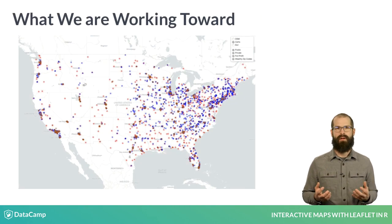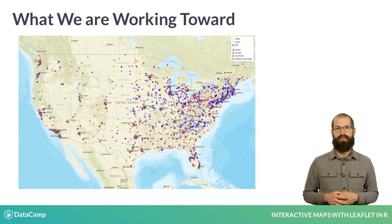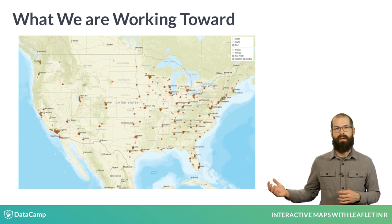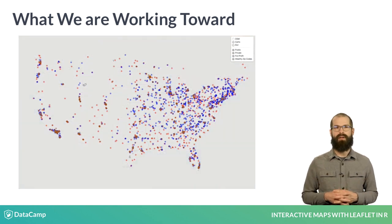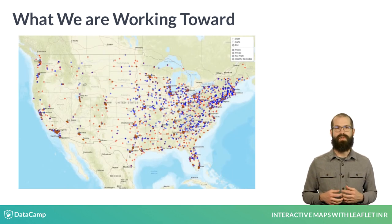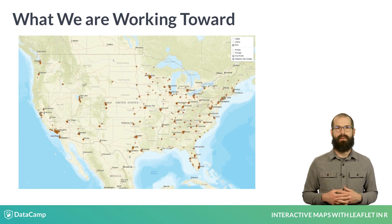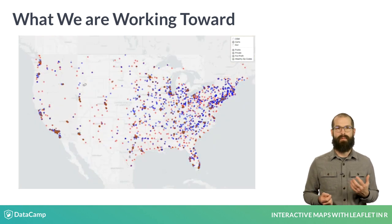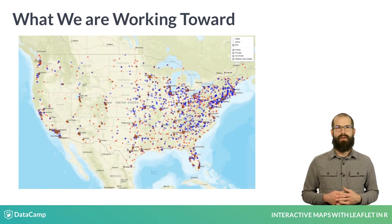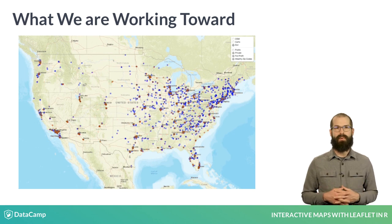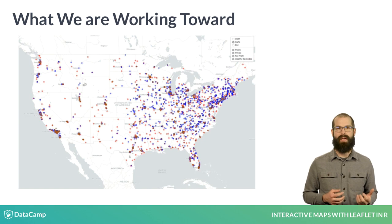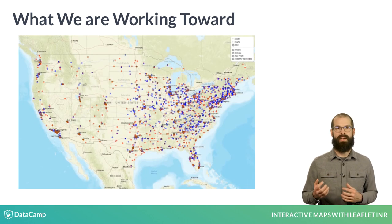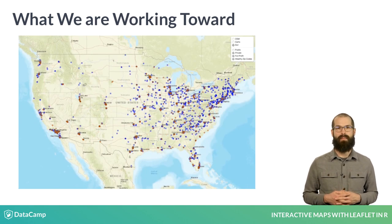In this course, we'll work towards building an interactive map like the one shown on the slide. This Leaflet map plots all four-year colleges in America and color codes these institutions by sector to indicate if they're public, private, or for-profit. Using the control panel in the upper right-hand corner, we can toggle the map between different base maps and select which sectors of colleges appear on the map.